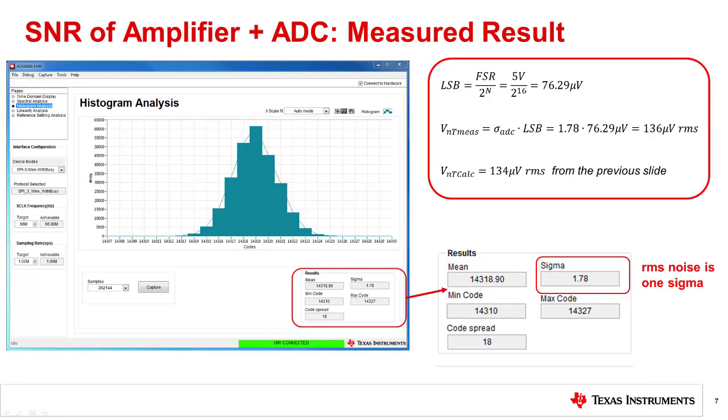Here, we measure the noise for the example from the previous slide. One way to measure noise is to look at the histogram for a precision DC input signal. Ideally, this histogram should have one code bin that corresponds to the input voltage. In reality, however, most converters will have a Gaussian distribution of output codes that correspond to the output noise. The standard deviation of this distribution is equal to the total RMS noise.